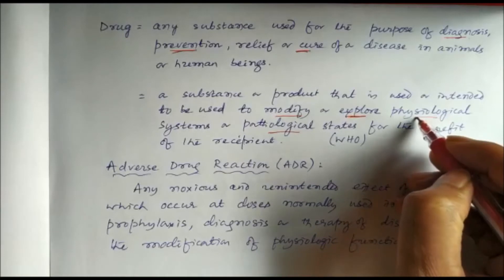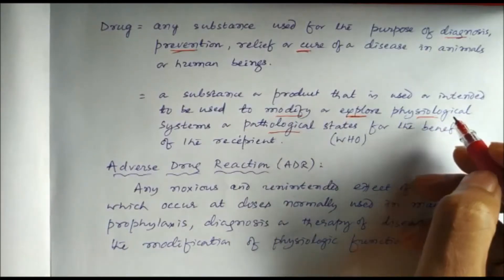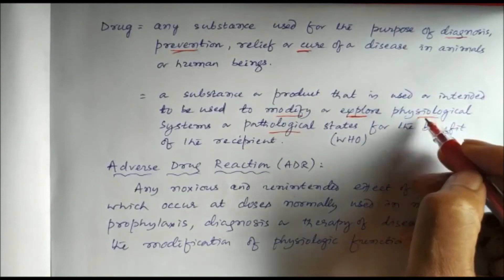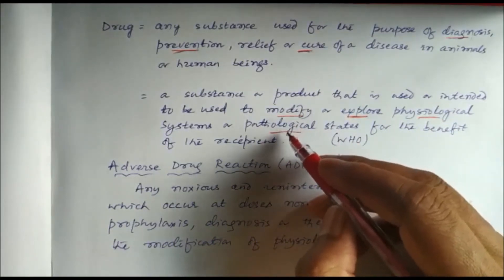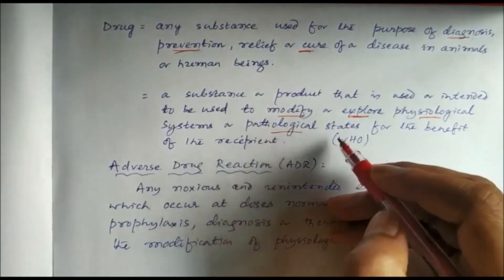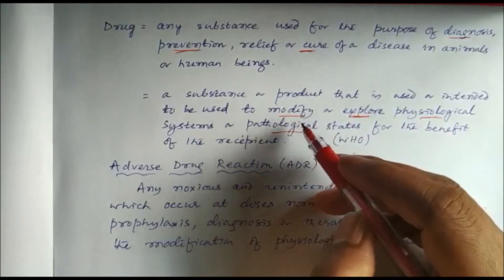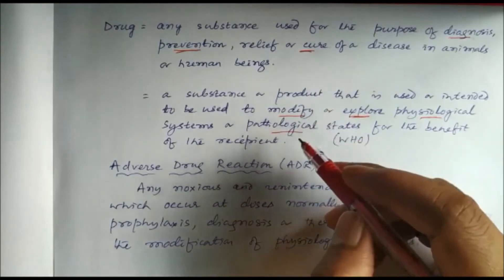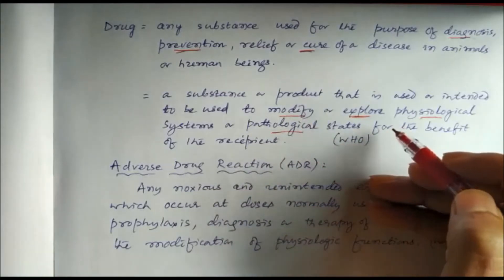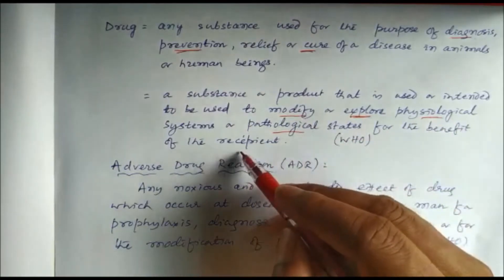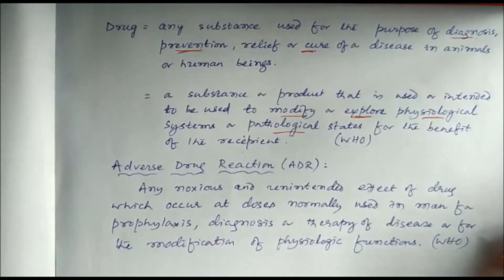The WHO definition covers modifying the physiological condition or pathological state. For example, a pregnant woman taking a drug is under physiological condition, whereas someone suffering from a disease is in a pathological state. In both cases, if a substance is intended to modify or explore for the benefit of the recipient, we call it a drug.